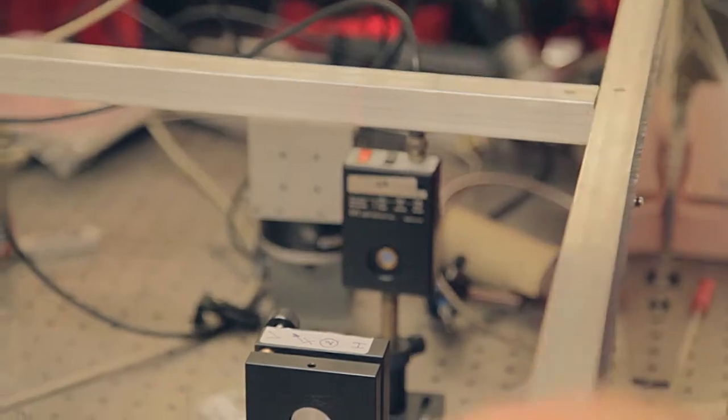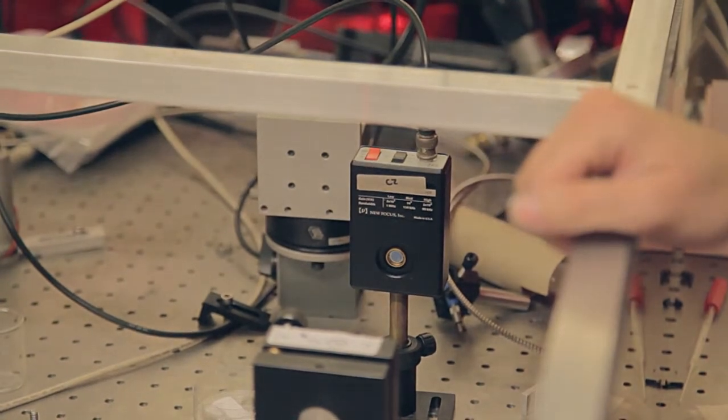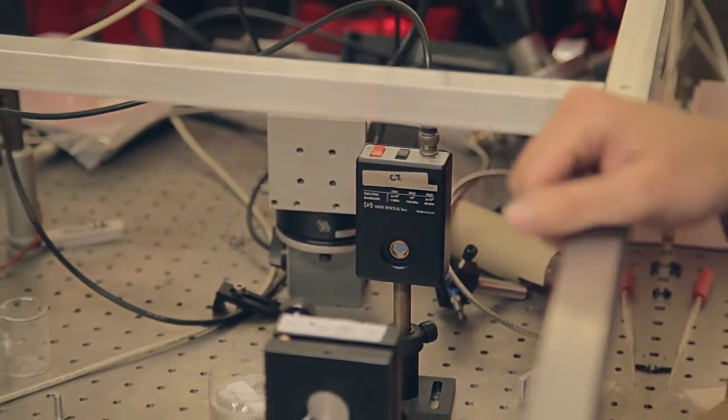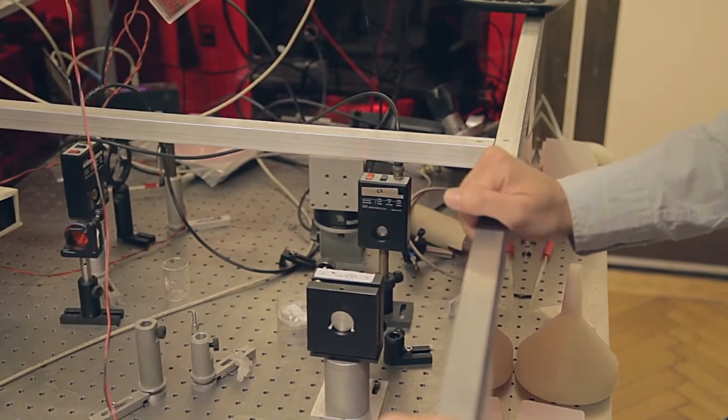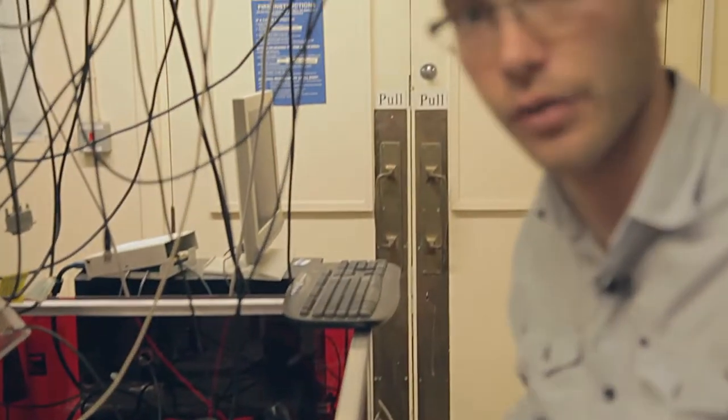We have a photo detector over here which we can also use to detect the light once we have light going through the two pinholes. What I'm going to demonstrate is some of the safety aspects and some of the alignment techniques that we use in order to do this type of laser alignment.